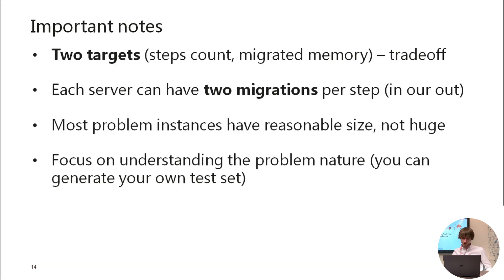Important notes to get is, we need to have optimizing two targets: number of steps and amount of migrated memory. So, you need to find a good trade-off here. Also, each server can have at most two migrations in a single step, including both in or out. This is the bottleneck. Most problem instances will be reasonable size, not very huge. So, please focus on understanding the problem nature. You may also want to generate your own dataset to try which situations are possible.